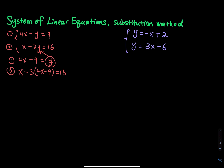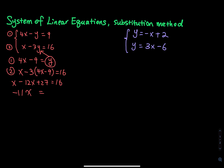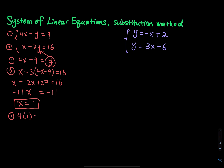Back to equation number two: distribute 3, so you have x minus 12x plus 27 equals 16. Then 1 minus 12 is negative 11, and 16 minus 27 is also negative 11, so x equals 1. After you get one variable, the other is easy — plug x equals 1 into equation one: 4 times 1 minus y equals 9, giving 4 minus y equals 9, so y equals negative 5.